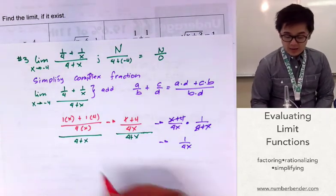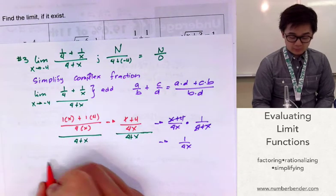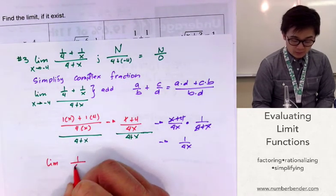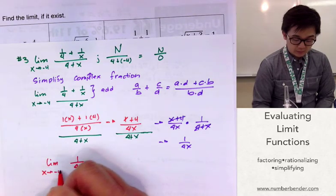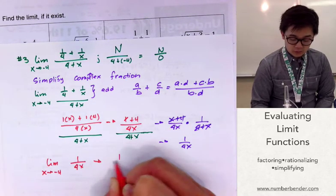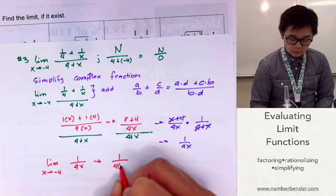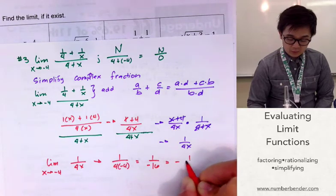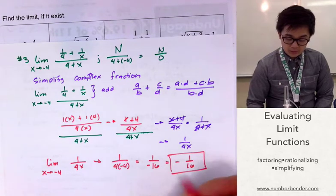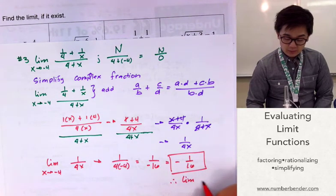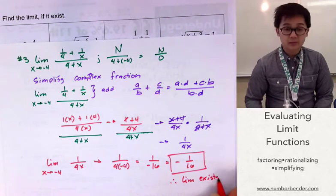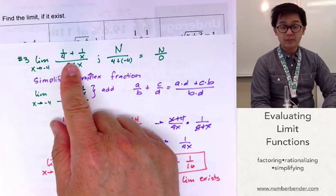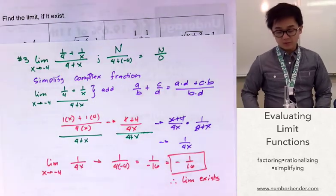Now we're ready to evaluate the limit at x approaches negative 4. The limit of 1 over 4x as x approaches negative 4 gives us 1 over 4 times negative 4, which is 1 over negative 16, or negative 1 over 16. Therefore, the limit exists. For problem number 3, we modified the complex fraction by simplifying it.